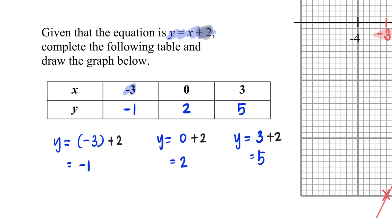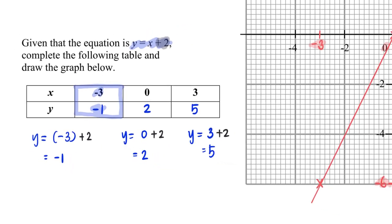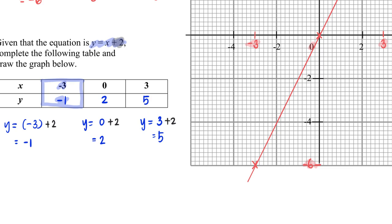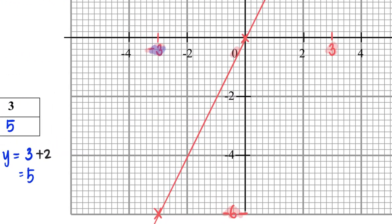And after which I'm going to start plotting this. X is negative 3, y is negative 1. So you need to then zoom in here, negative 1 is here. So this point here happens to be the point where x is negative 3, y is negative 1.